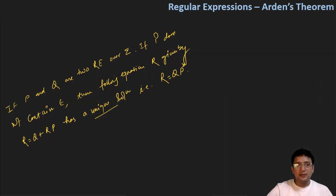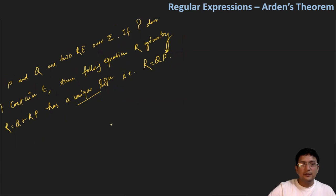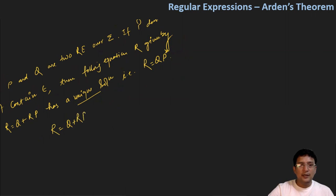Let's prove the first part. Take the equation r = q + rp. In the right-hand side, replace r with qp*, which is the solution. So in the right-hand side, I'm going to replace r with qp*.